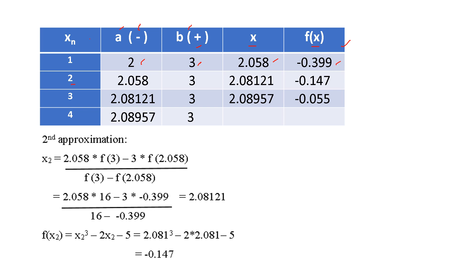Now we proceed to the second approximation. In the first approximation, we had a = 2, b = 3, x1 = 2.058, and f(x1) = -0.399. Since f(x1) is negative, x1 replaces a in the next iteration. The negative value stays on the a side, and f(b) remains 16 on the positive side.